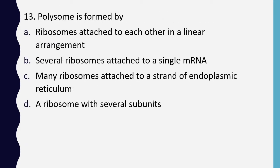Question 13. Polysomes are formed by: ribosomes attached to each other in a linear arrangement; several ribosomes attached to a single mRNA; many ribosomes attached to a strand of endoplasmic reticulum; or a ribosome with several subunits. Correct answer is option B: several ribosomes attached to a single mRNA.